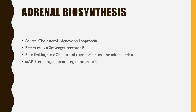The source for adrenal hormone synthesis is cholesterol. The cholesterol can be synthesized de novo by adrenal glands or it can be taken up from circulation as lipoproteins. Among lipoproteins, high-density lipoprotein is the major source. It enters into the cell via scavenger receptor B. Synthesis mainly occurs in mitochondria and endoplasmic reticulum.